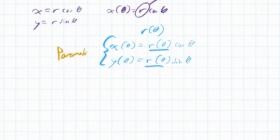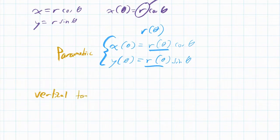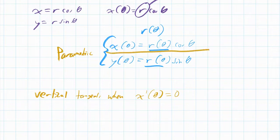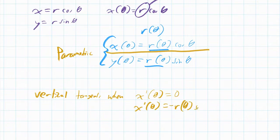Given these parametric equations, we can find vertical tangents. Vertical tangents occur when x′(θ) = 0. Since x(θ) = r(θ)·cos(θ), applying the product rule gives x′(θ) equal to the first times the derivative of the second — which is r(θ)·(−sin θ) — plus the second times the derivative of the first: cos(θ)·r′(θ).